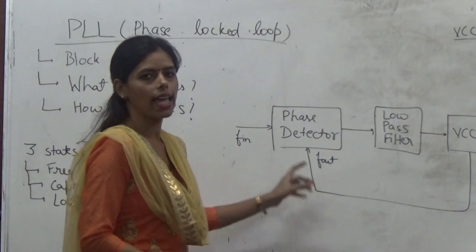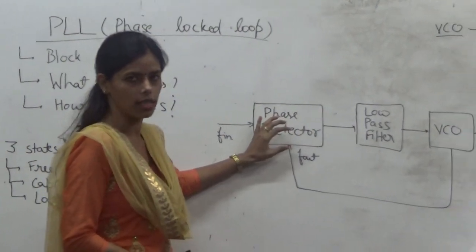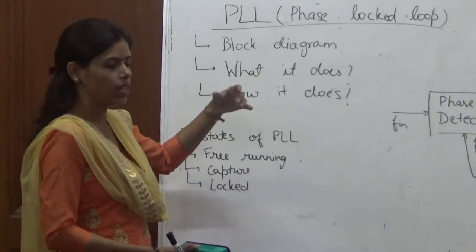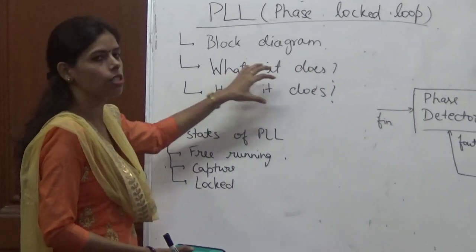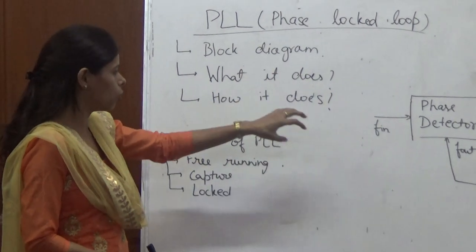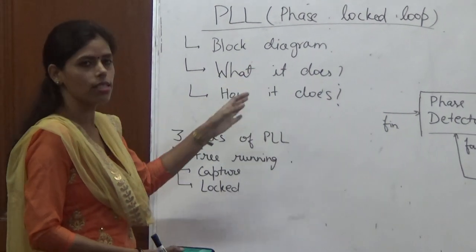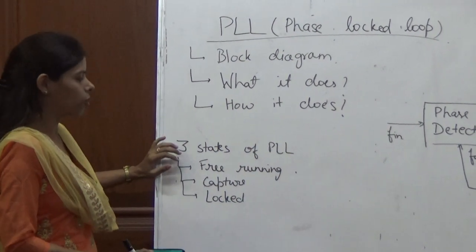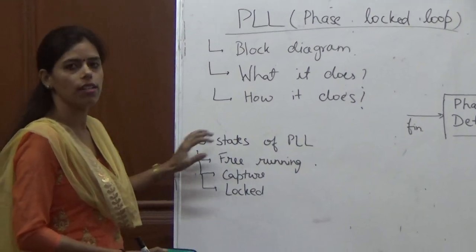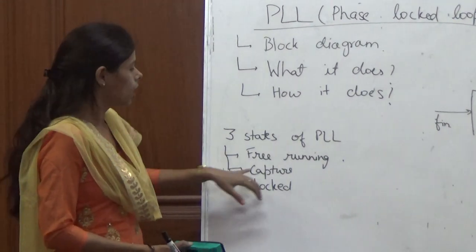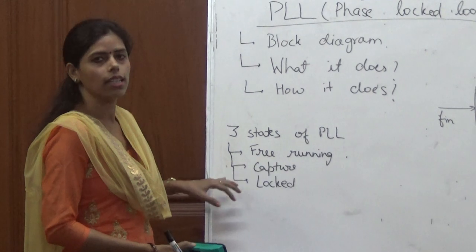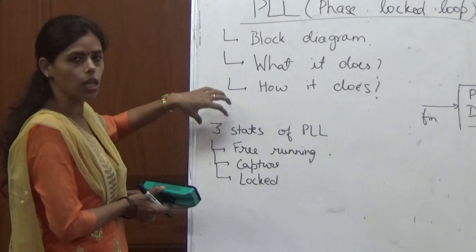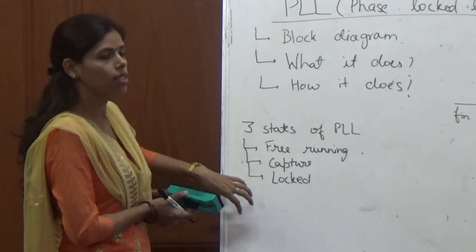The heart of this block diagram is the phase detector. If we talk about the function of PLL, we should know what are the different states through which PLL goes. The first state of the PLL is the free running state, the second one is the capture state, and the third one is the lock state. The PLL moves through these three states.